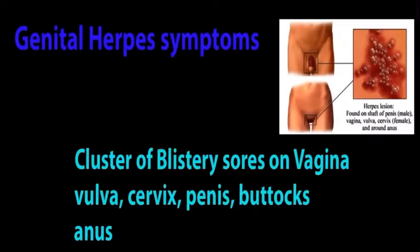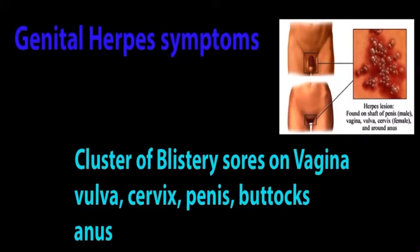Genital herpes symptoms: cluster of blistery sores on the vagina, vulva, cervix, buttocks, and anus.